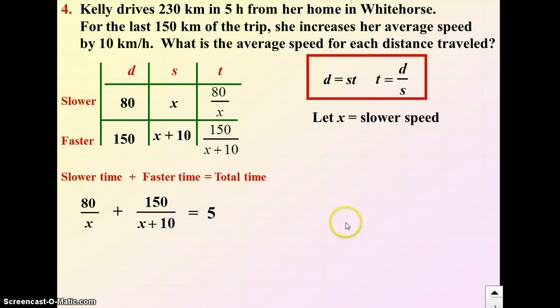It doesn't look like a quadratic equation right now. So I want to get rid of these denominators. I'm going to multiply the whole equation by the lowest common denominator, which in this case is x times x plus 10. So I multiply the whole equation by x times x plus 10. I'll eliminate my denominators and turn this into a quadratic equation. So 80 over x multiplied by x times x plus 10, these x's would cancel. I'm left with 80 times x plus 10. 150 over x plus 10 multiplied by x times x plus 10, the x plus 10s would cancel. I'm left with 150 times x. And finally we get equals five times x times x plus 10.